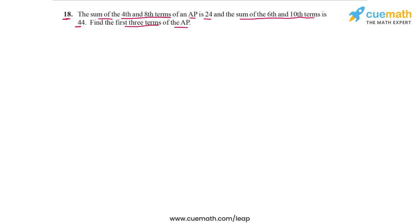This basically means we have to determine the AP or its parameters A and D, the first term and the common difference, because that will enable us to write the first three terms of the AP. So the unknowns are the first term A and the common difference D.